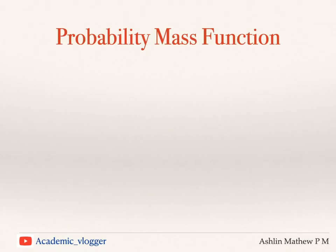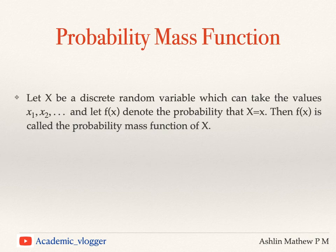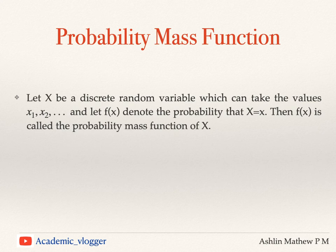Coming to what is a probability mass function: let X be a discrete random variable which can take the values x1, x2, etc. Let f of x denote the probability of capital X taking the value small x. Then this f of x is called a probability mass function of x. So f(x) = P(X = x) is the probability mass function of x.